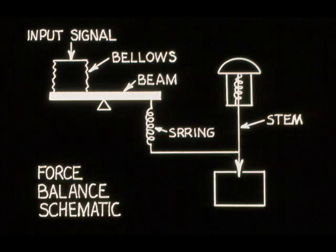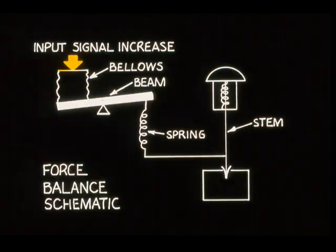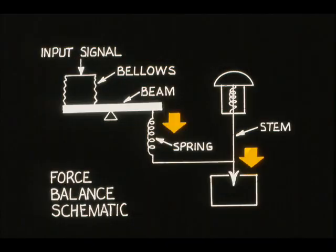In the force balance type, the input pressure is opposed by a spring. The spring tension is changed by the valve stem movement. The design is such that an increase in input signal causes the bellows to force the left-hand end of the beam downward. The valve stem then moves downward, putting more tension on the spring, and this action restores the beam to balance.